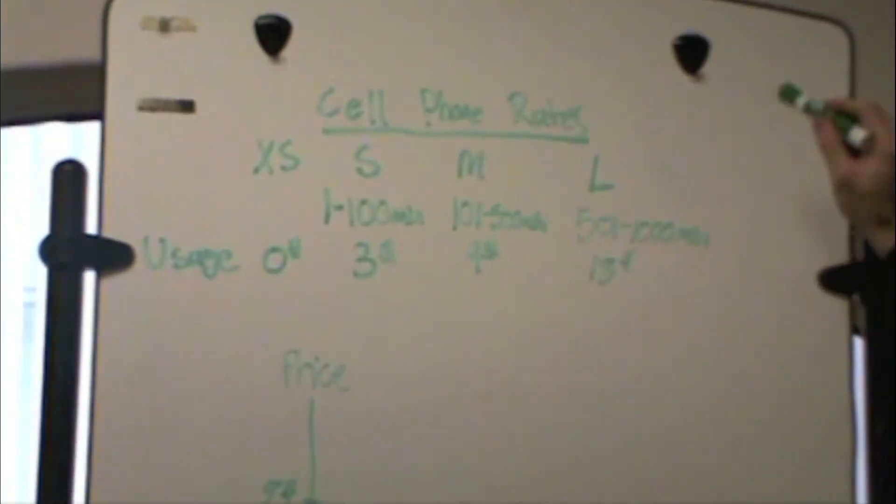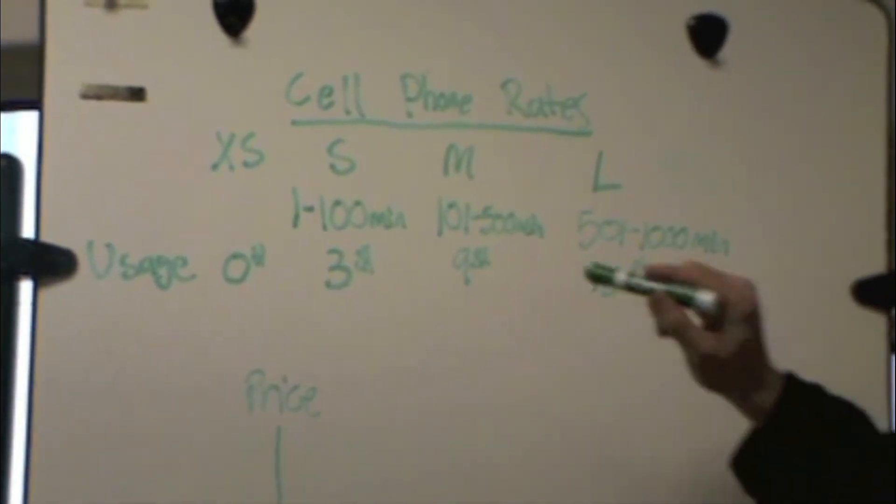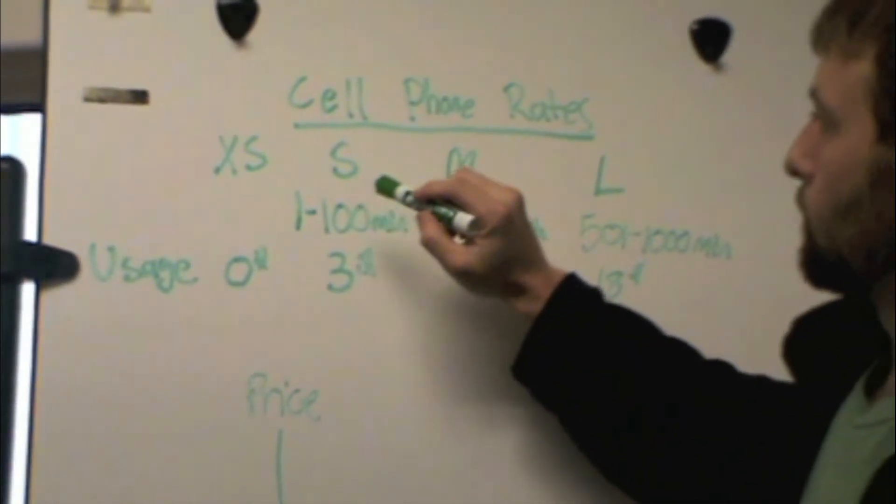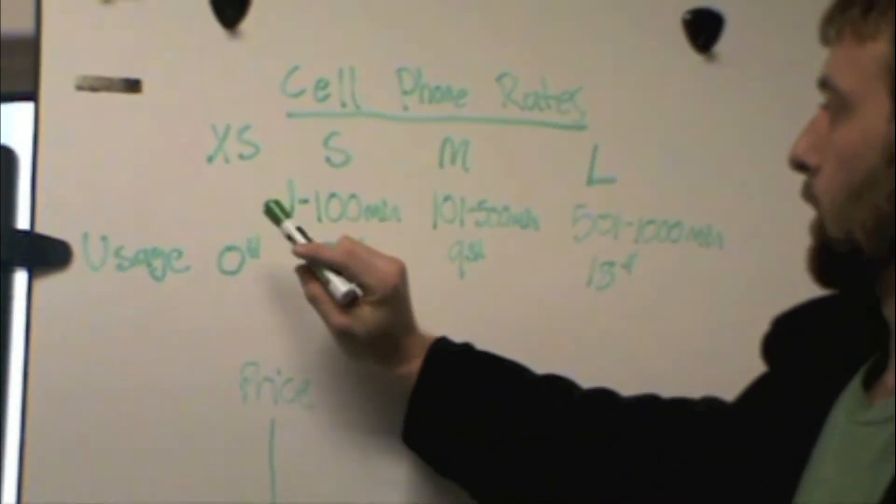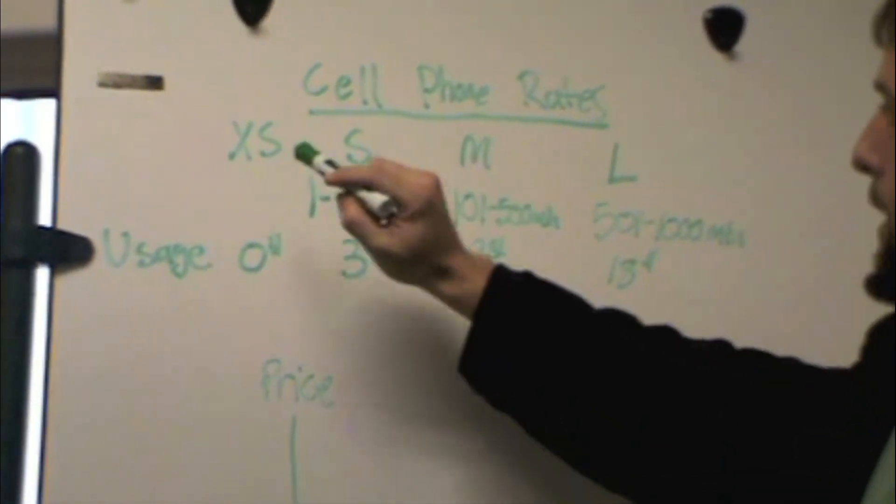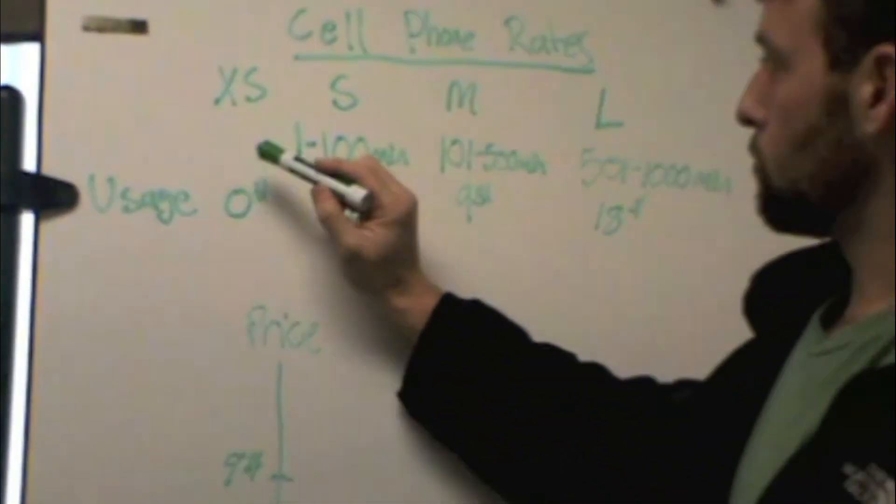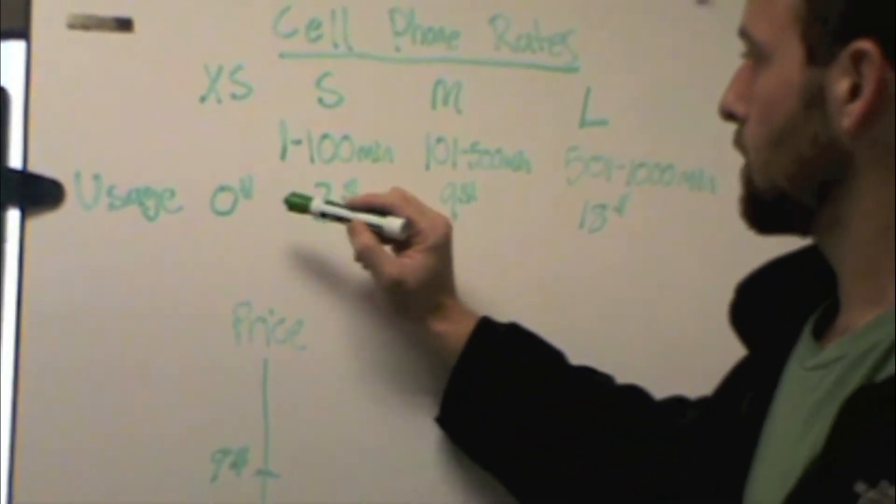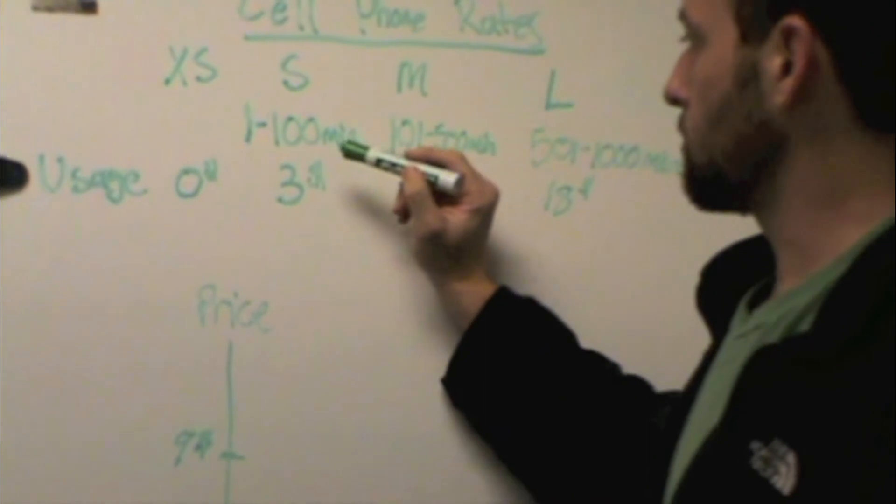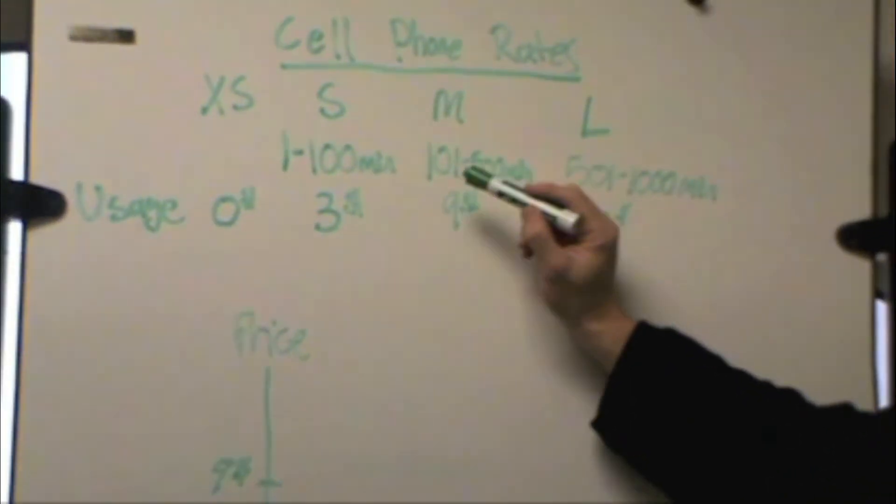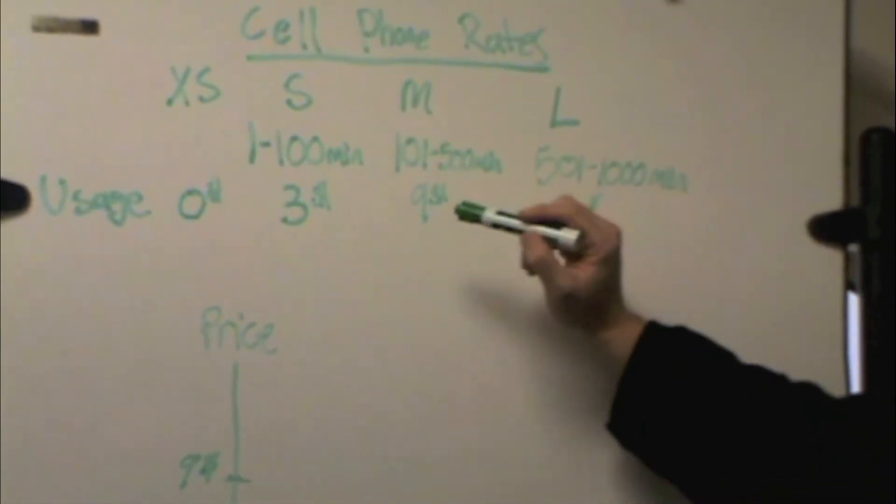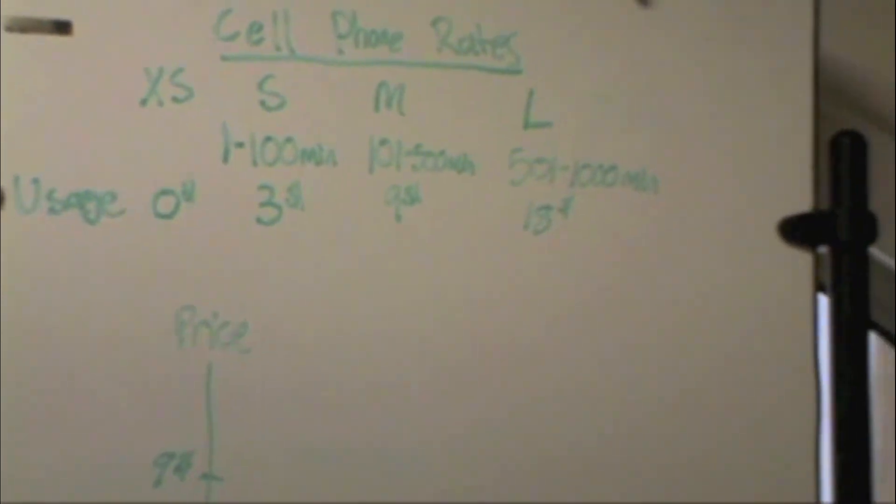Basically what this chart is breaking down is a prepaid cell phone bill where you have different types of plans: extra small, small, medium, or large. If you use zero minutes, it's going to cost you zero dollars. When you use one to one hundred minutes, it's going to cost you three dollars. When you use one hundred and one to five hundred minutes, it's going to cost you nine dollars, and so on and so forth.